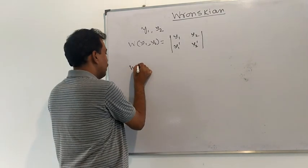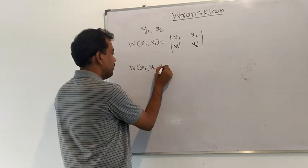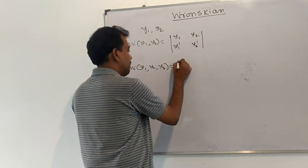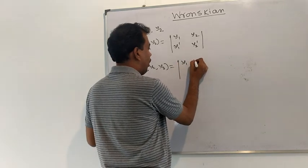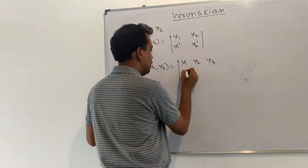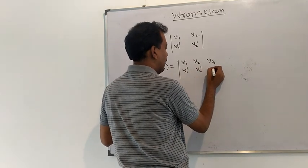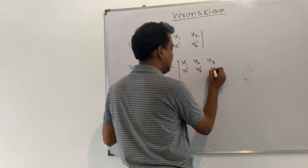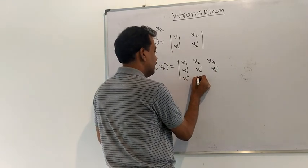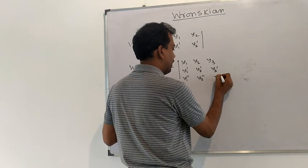Similarly, the Wronskian of three functions y1, y2, y3 is a determinant of third order whose first row is y1, y2, y3; second row is their first order derivatives; and third row is their second order derivatives.